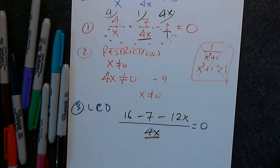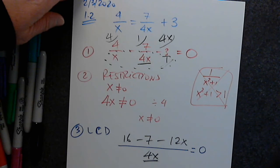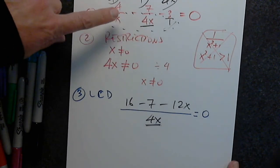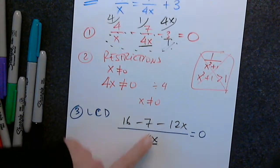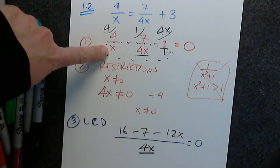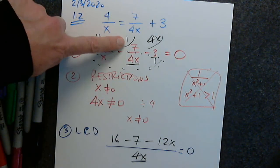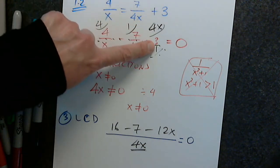Do you all see the 16 minus 7 minus 12x? Please say no if you don't see it — don't be shy. A student mentioned that 4x would multiply by 4 to give 16x. The least common denominator is 4x. We multiplied the denominator only by 4, so if I multiply the denominator by 4, I have to multiply the numerator by 4 as well — not by anything else. Here, 1 was multiplied by the whole thing, so the numerator must be multiplied by the same factor.